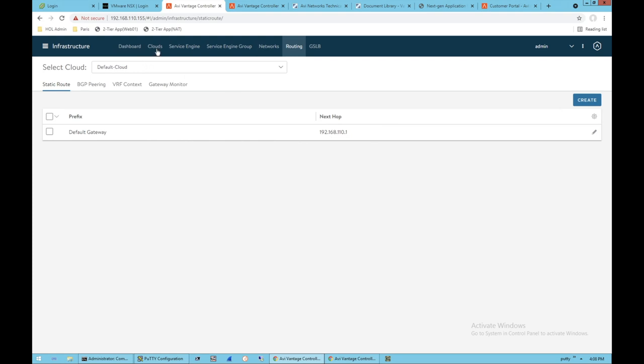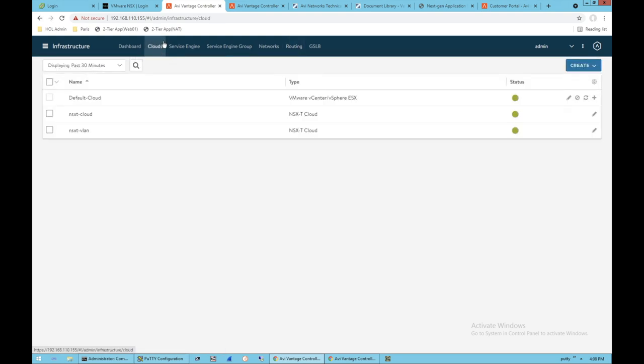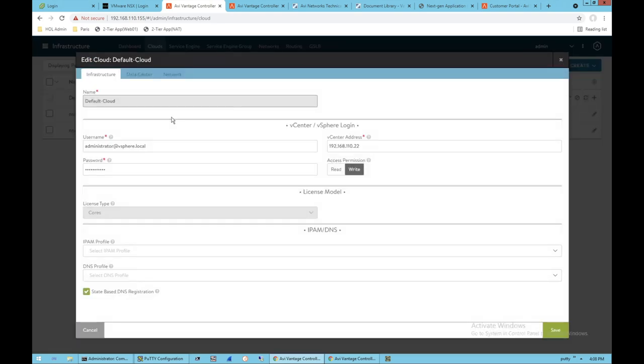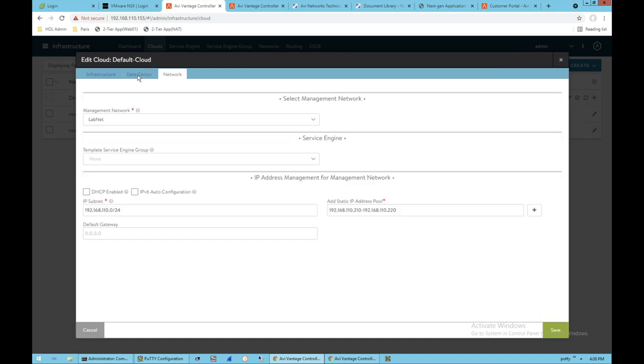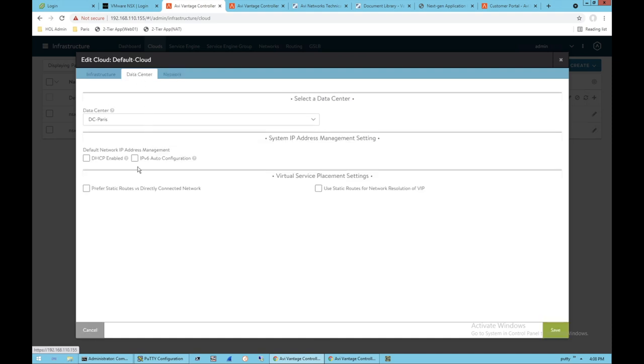The only other step is I actually need to go into my cloud connector. So I have a vCenter cloud connector in my environment. All I got to do is pop into the cloud connector, go over to the data center tab. And in the data center tab, all I need to do is make sure that Avi knows I would like it to prefer static routes over directly connected networks.